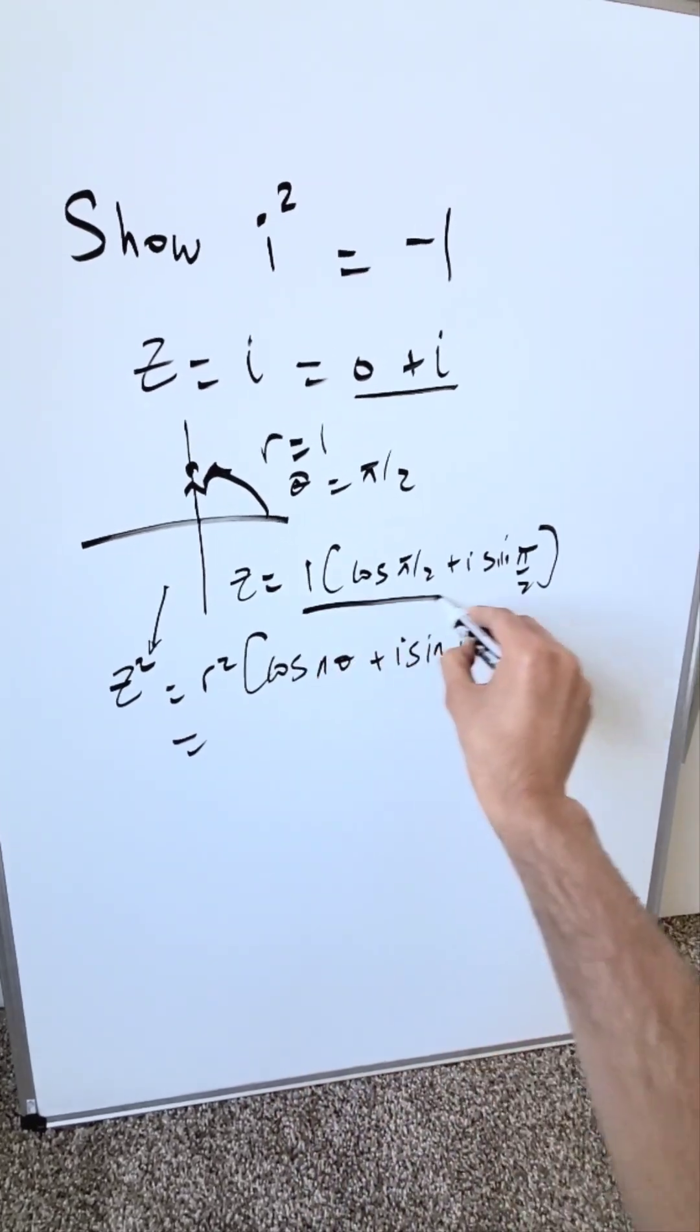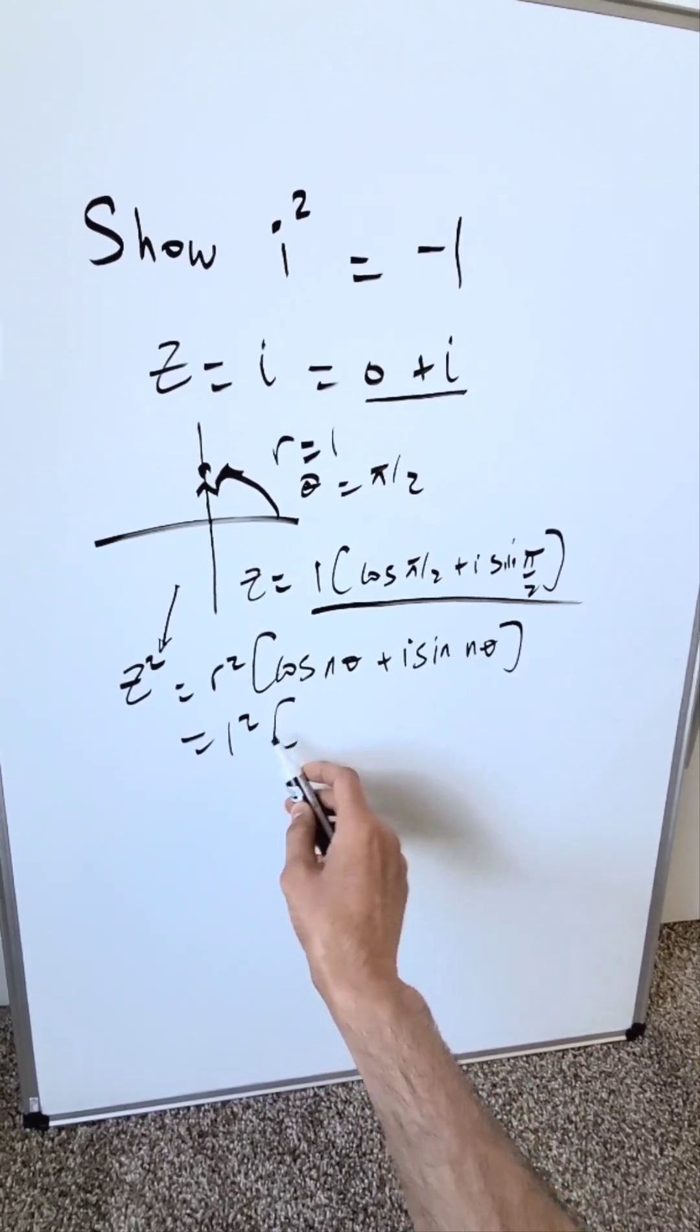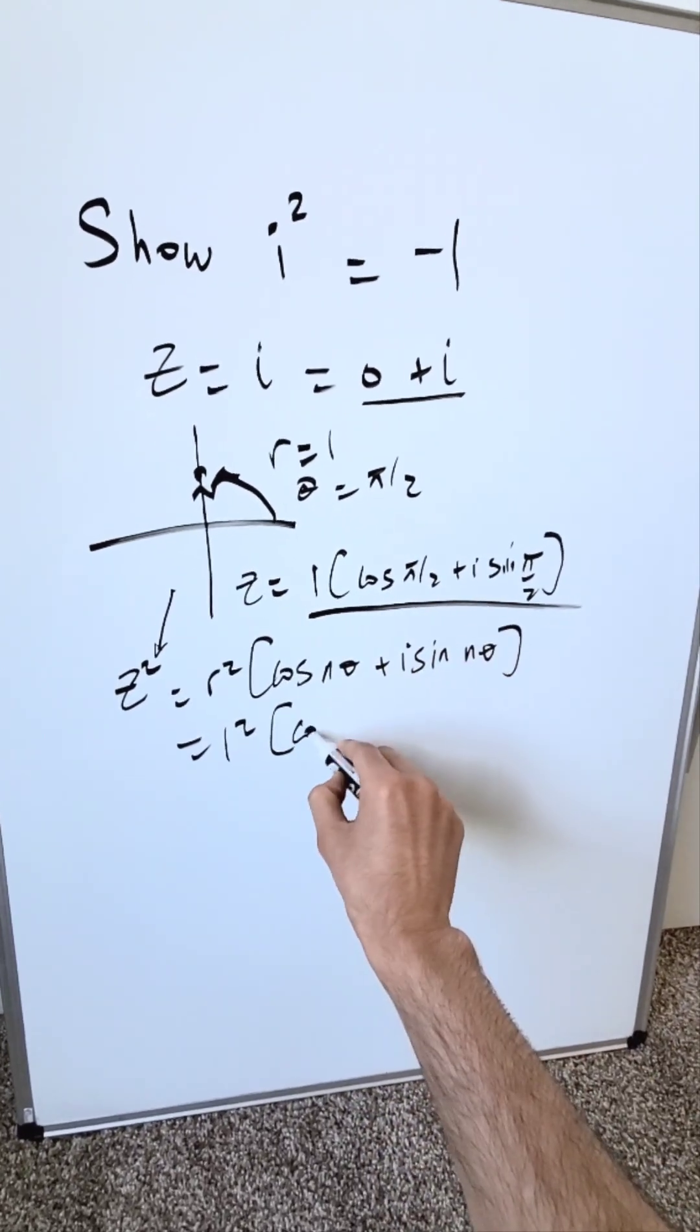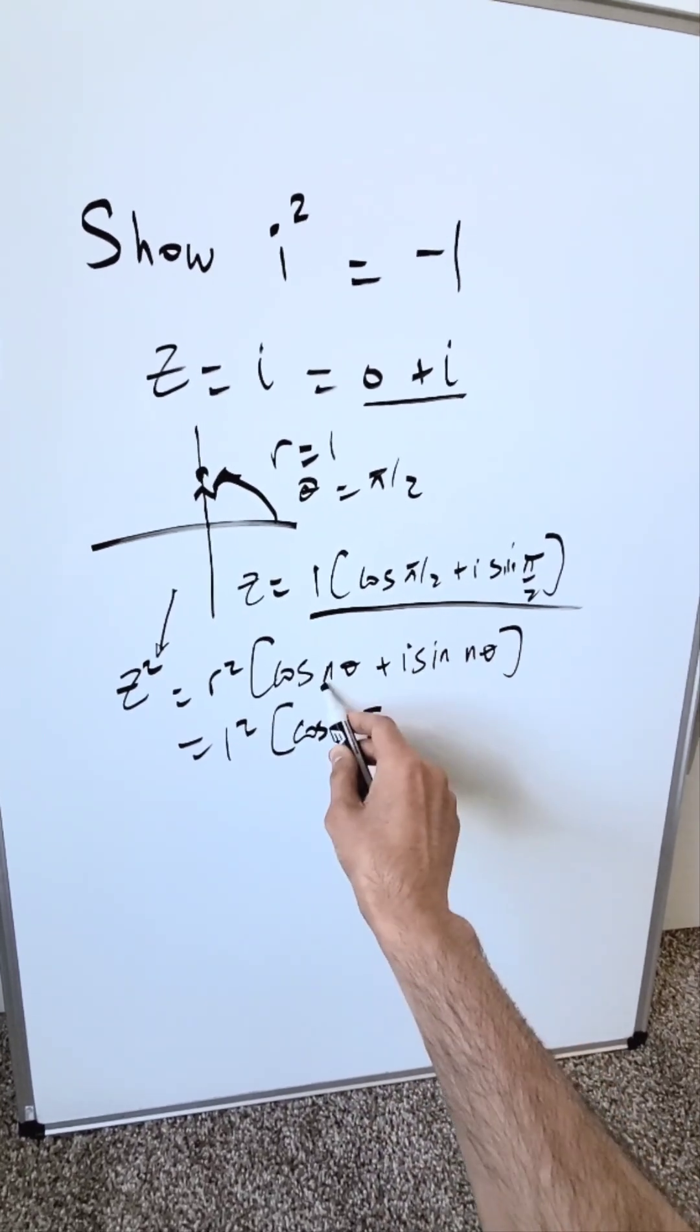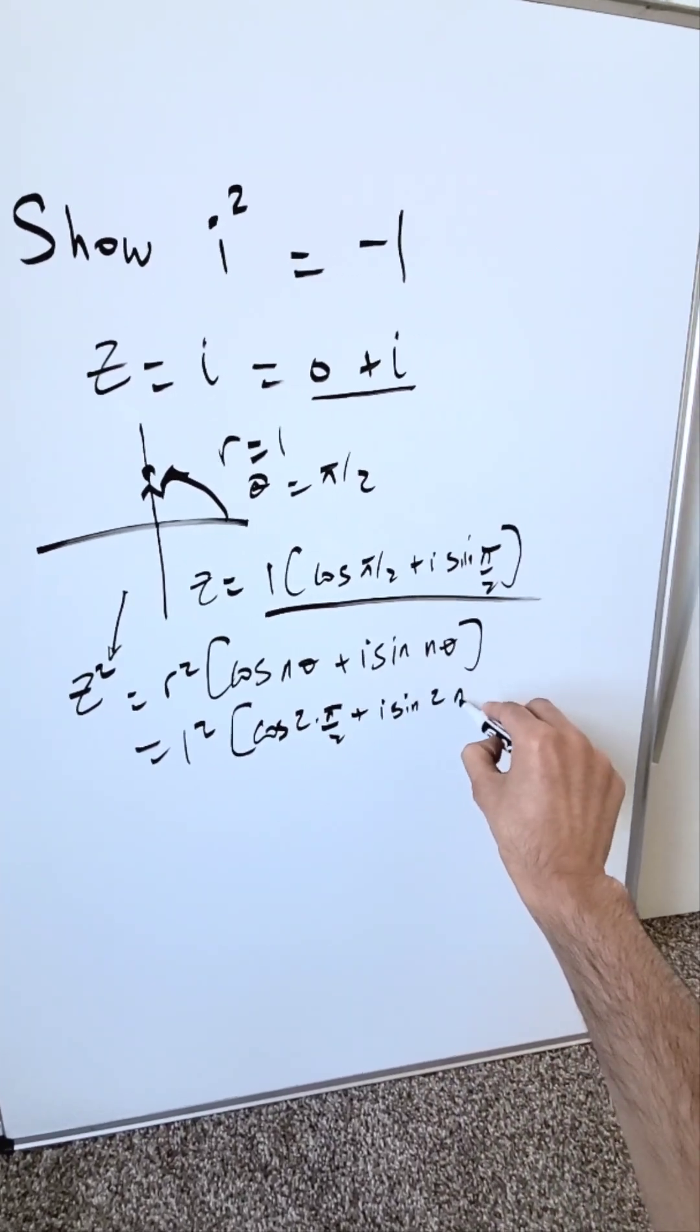We have everything right over here in this representation. I have an r squared, which is a 1 squared, which is equal to 1. I have a cosine pi over 2, but that'll be cosine 2 times pi over 2. Because now you're bringing in an n value plus i sine 2 pi over 2.